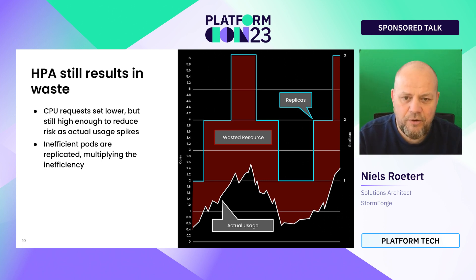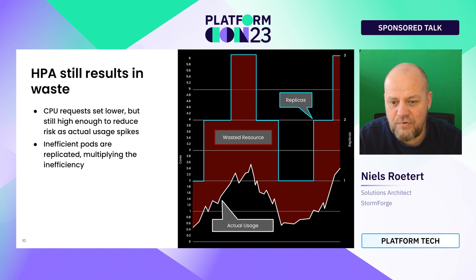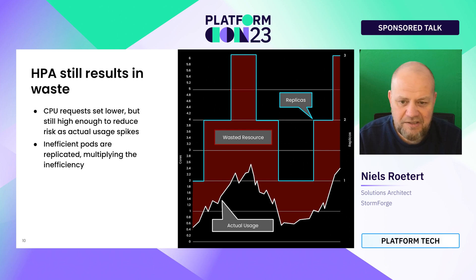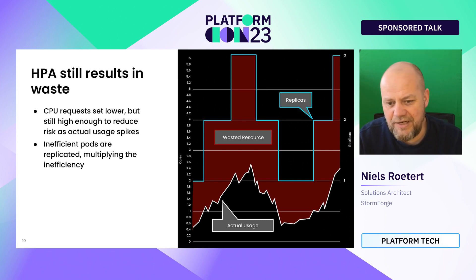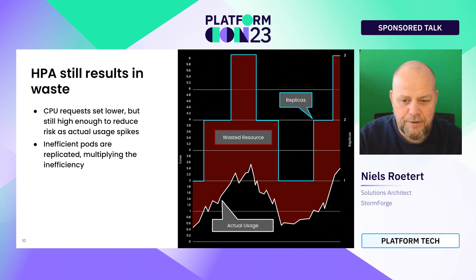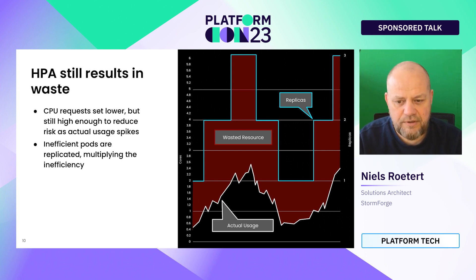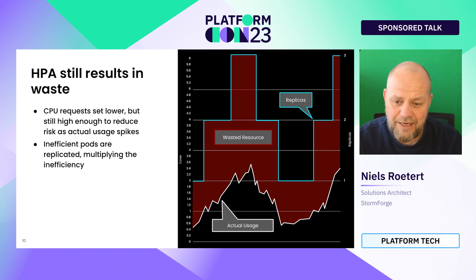If you scale out too soon, you're basically multiplying the wasted resources. If you scale too late, it might take a long time for the pod to get started and you still see performance issues. So how do you come up with a decent setting? Even with trimmed-down resource requests, there's always going to be some slack and headroom, which gets multiplied when scaling out.